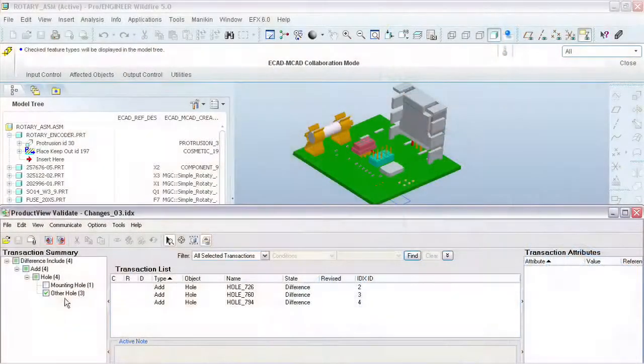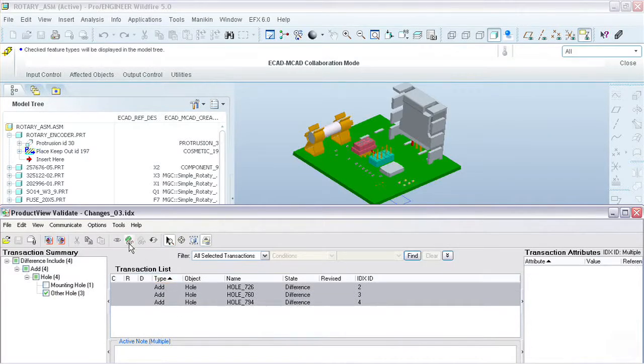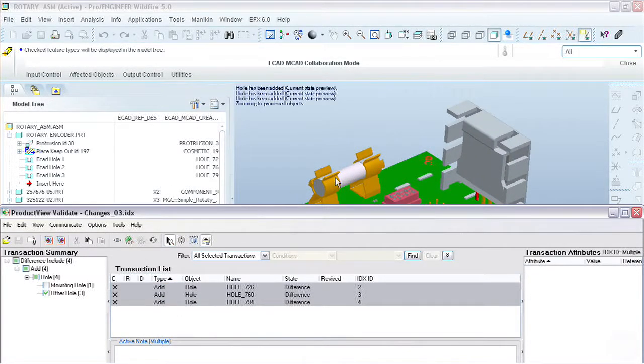The exchange of information was limited to board outline and objects with IDs. In ProEngineer Wildfire 5,